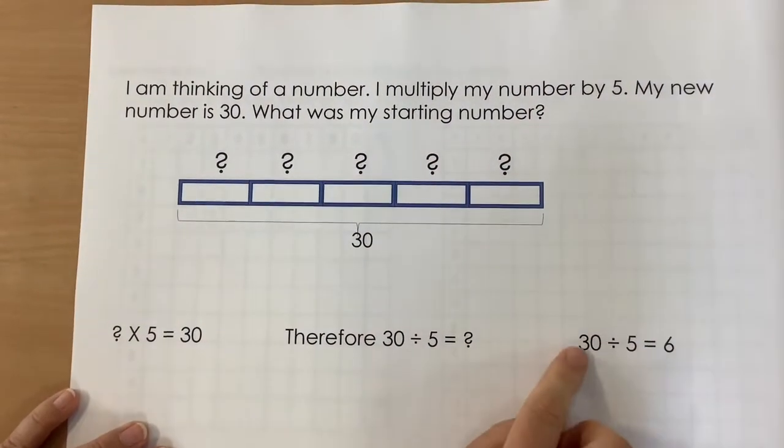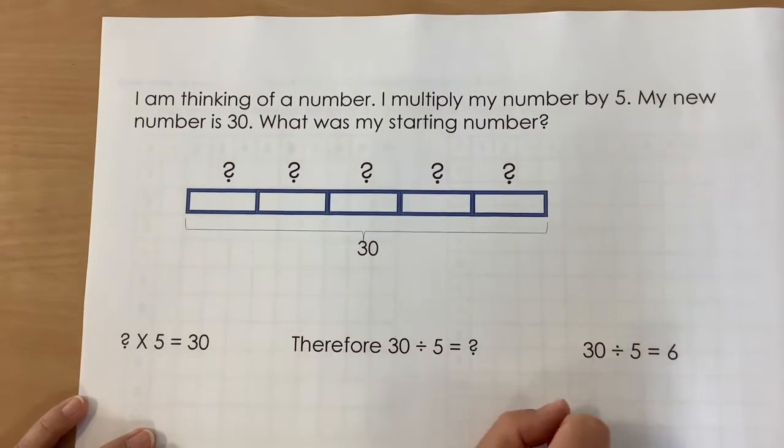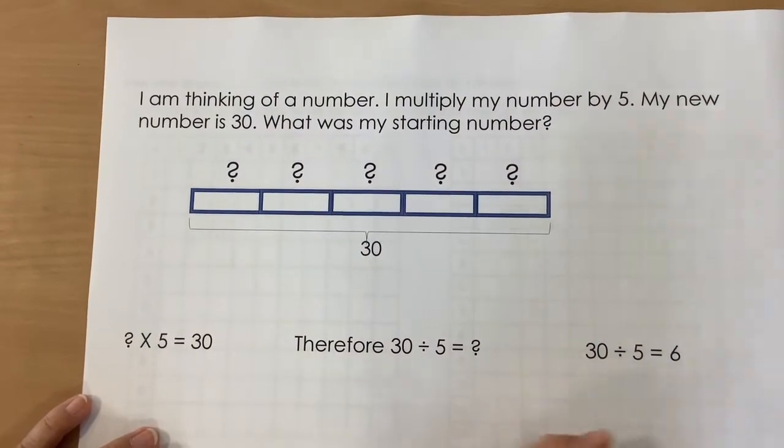And we can do a quick check. 30 divided by 5 is 6. 5 multiplied by 6 is 30.